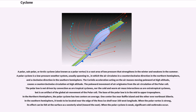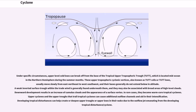When the polar vortex is strong, its effect can be felt at the surface as a westerly wind toward the east. When the polar cyclone is weak, significant cold outbreaks occur. Under specific circumstances, upper-level cold lows can break off from the base of the tropical upper tropospheric trough (TUTT), which is located mid-ocean in the northern hemisphere during the summer months. These upper tropospheric cyclonic vortices, also known as TUTT cells or TUTT lows, usually move slowly from east-northeast to west-southwest, and their bases generally do not extend below a certain altitude. A weak inverted surface trough within the trade winds is generally found underneath them, and they may be associated with broad areas of high-level clouds. Downward development results in an increase of cumulus clouds and the appearance of a surface vortex. In rare cases, they become warm-core tropical cyclones.